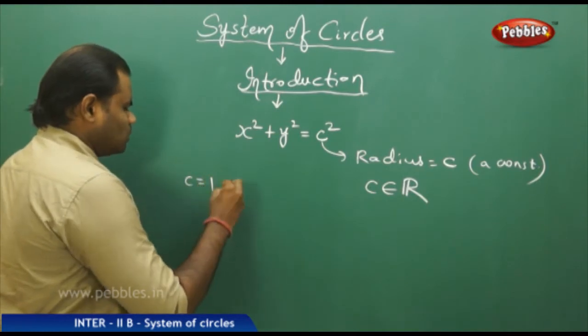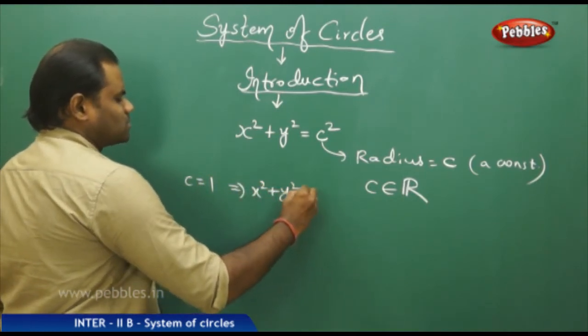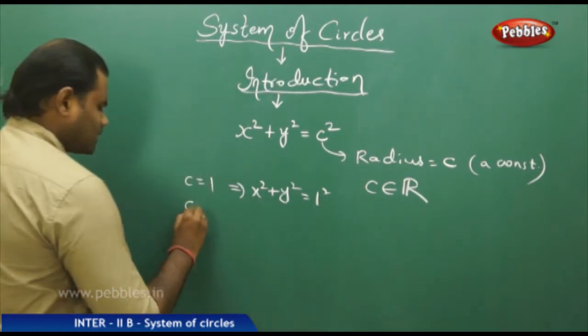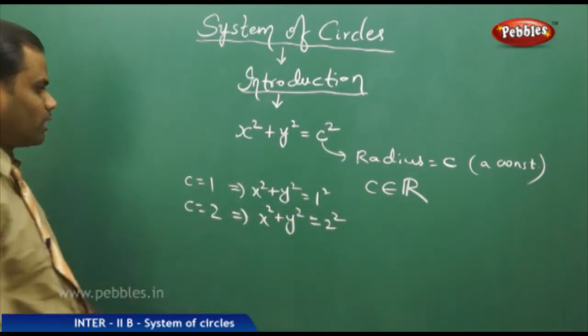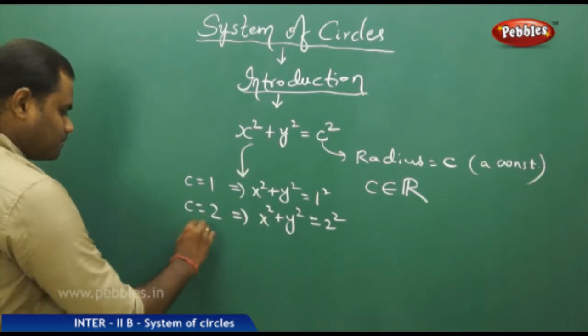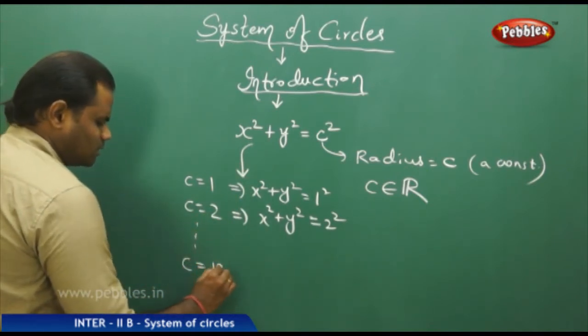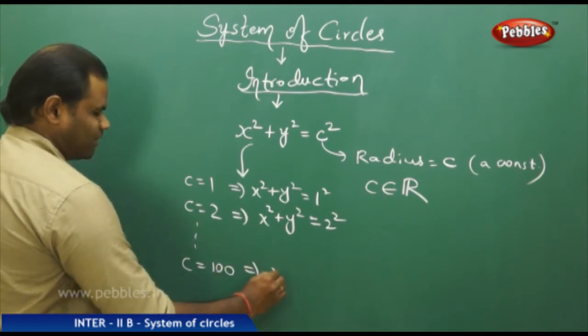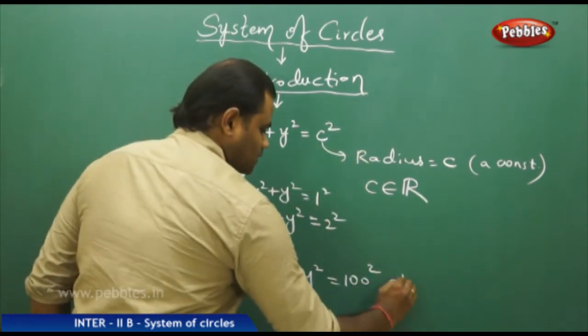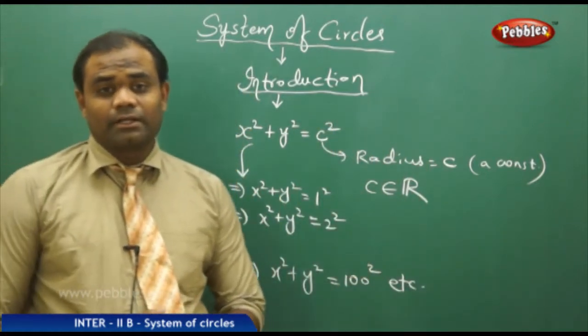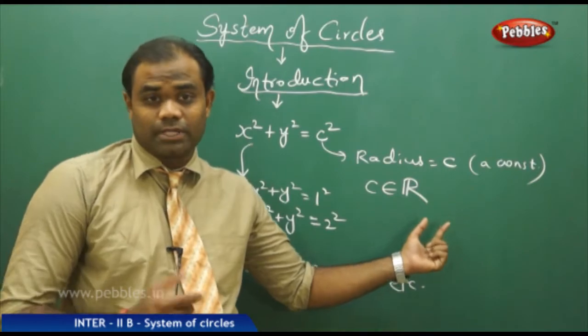For example, C equals 1 implies x squared plus y squared equals 1 squared, and C equals 2 implies x squared plus y squared equals 2 squared. Similarly, C equals 100 implies x squared plus y squared equals 100 squared, and so on. This makes us understand that for different values of C belonging to the set of real numbers, we get different types of equations, which together form the system of circles.